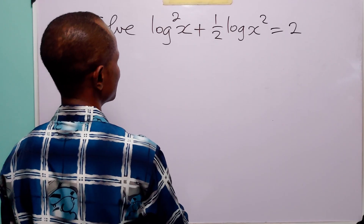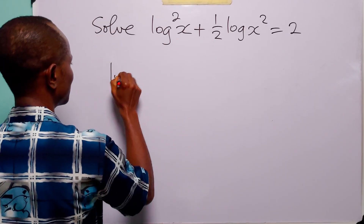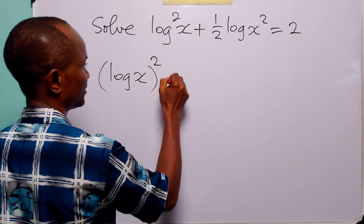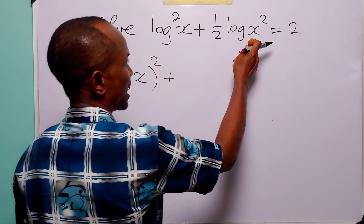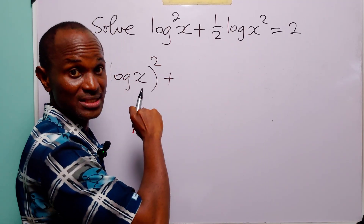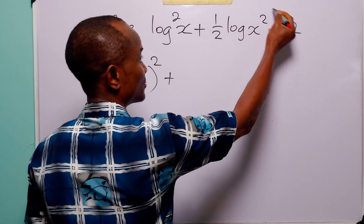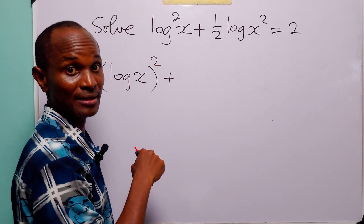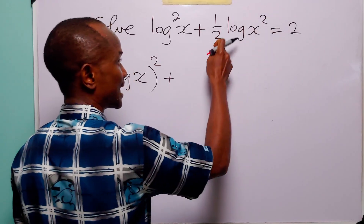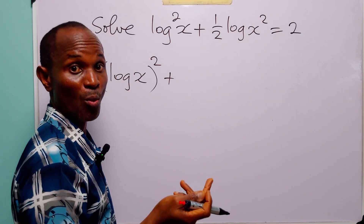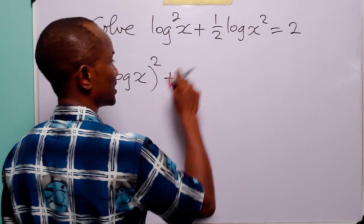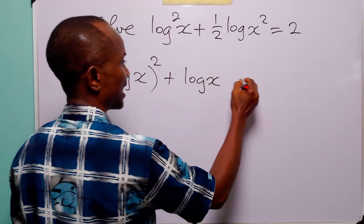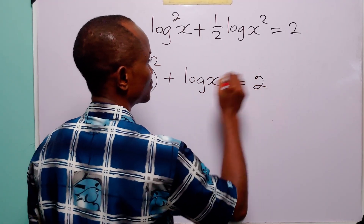Now let us rewrite this equation. Here we have log x, all squared. We are going to apply the power rule of logarithms to this term — that is, we are going to bring down the power 2 to the front to become a multiplier, and of course 2 times a half is equal to 1. So here we have log x, and this is equal to 2.